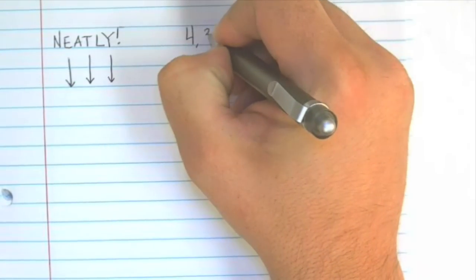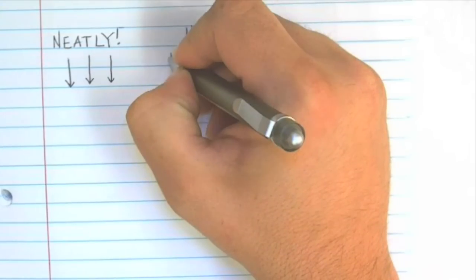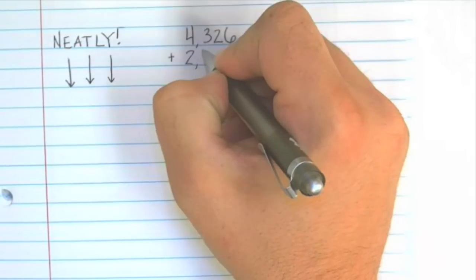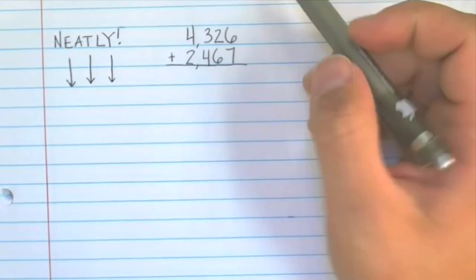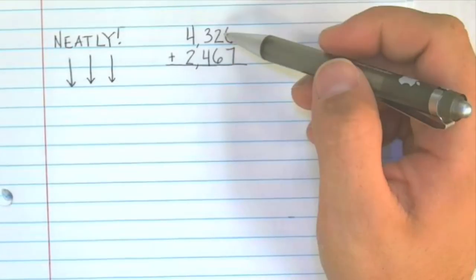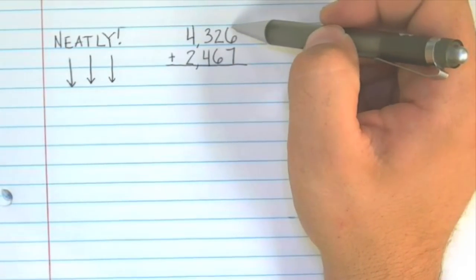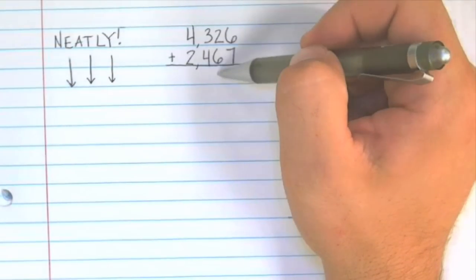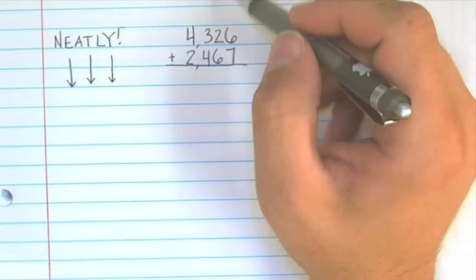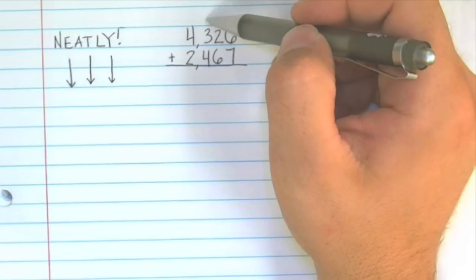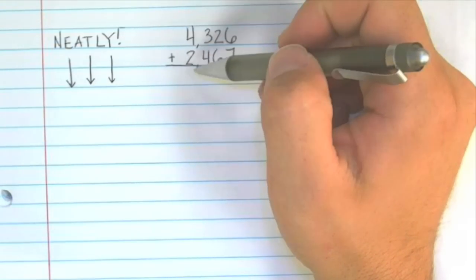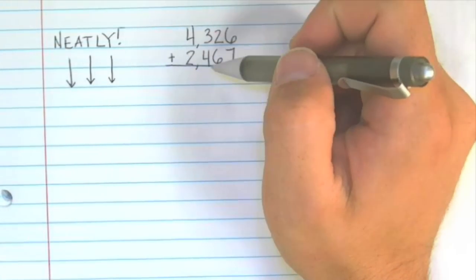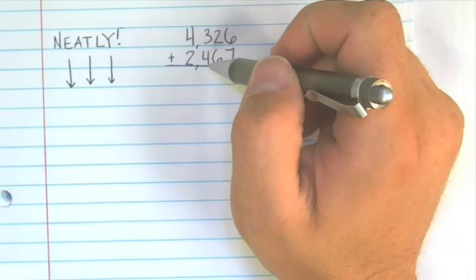It will make our life as a mathematician much easier. So with that in mind, let's start with 4,326 plus 2,467. If you notice, my numbers are neat and easy to read. And the columns, the ones column, are lined up on top of each other. The tens digits are lined up on top of each other. The hundreds digits are lined up on top of each other. And the thousands digits are lined up on top of each other. This is very important when we do addition, subtraction, multiplication, division. It will really help us become more accurate as mathematicians.